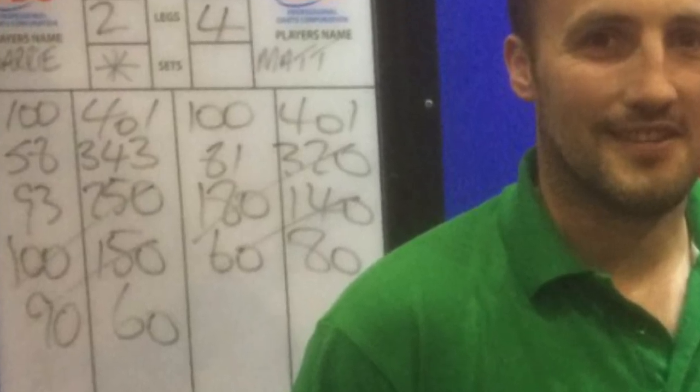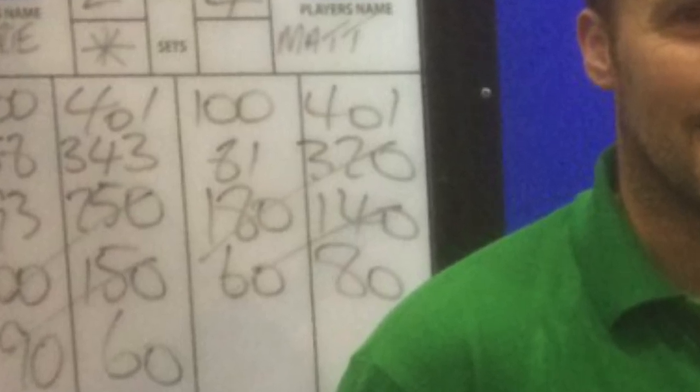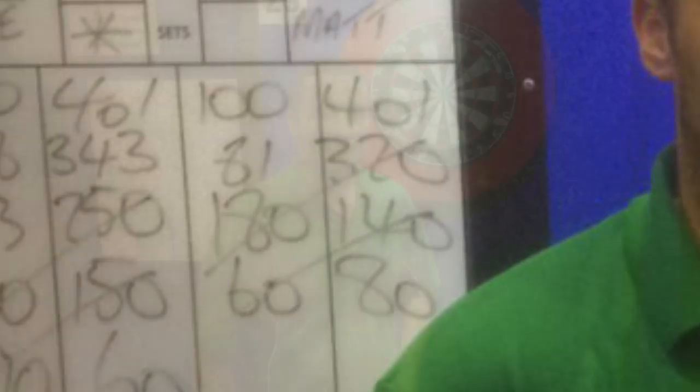The first thing to point out is you'll see a star there to the side of Barry's name. This means that Barry throws first in this leg. The marker when he rubs the board out will move the star over to my box, so it just shows who throws first.